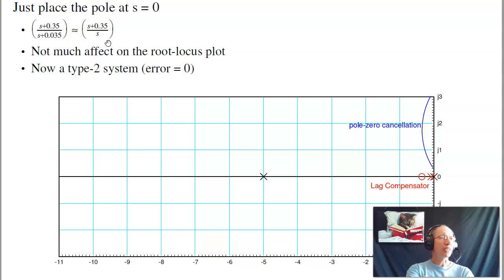If you want to get better tracking, like if you want to track a step input, make it type 1. If you really want to track a ramp input, make it type 2. So rather than monkeying around with putting a pole at 0.03, just put it at the origin. And now to design your compensator, I'll have to add a zero to pull the root locus left. But I'll no longer have any error for a step or ramp input.